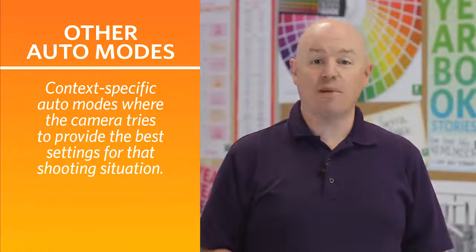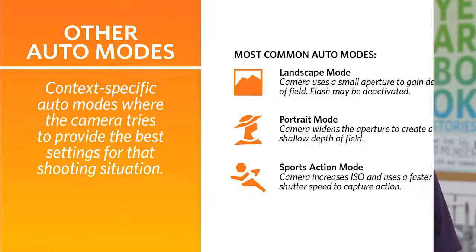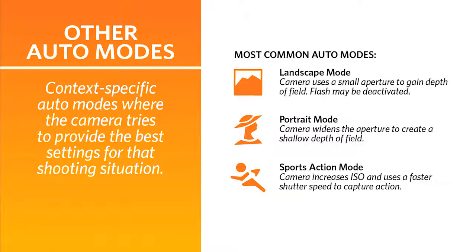Your camera's dial might have a couple of other modes available, such as landscape, portrait, or sports action, also known as the running man. These modes are simply variations on the auto mode. While they might help in some isolated situations, they don't allow the photographer to take full control over the camera or their images.